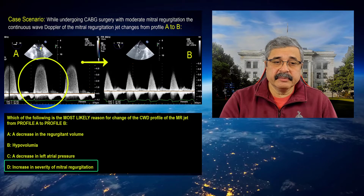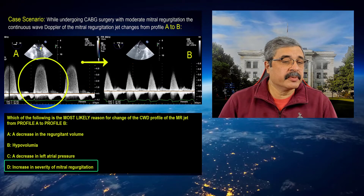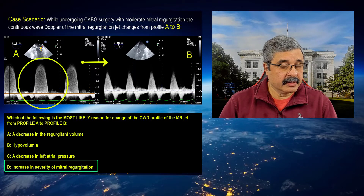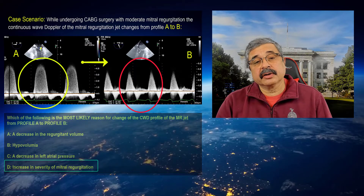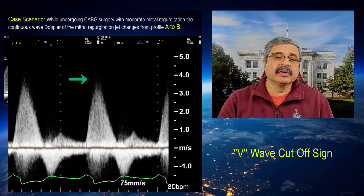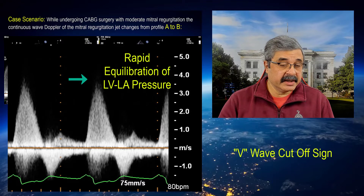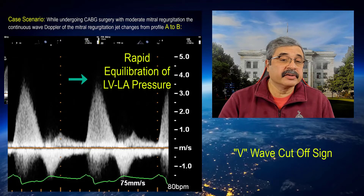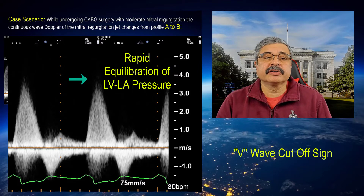and then gradually, as the MR proceeds, the pressure equilibrates between the left ventricle and the atrium. The panel on the right demonstrates what is called the V-wave cutoff sign, which means that so much volume enters the left atrium in the early part of mitral regurgitation